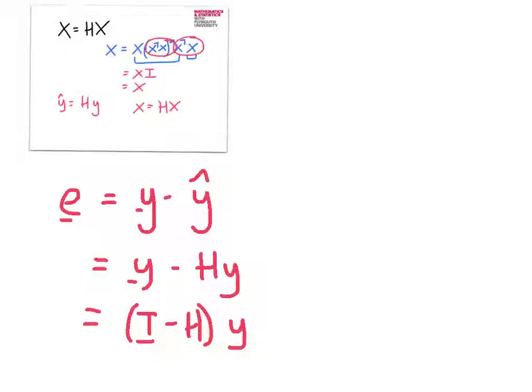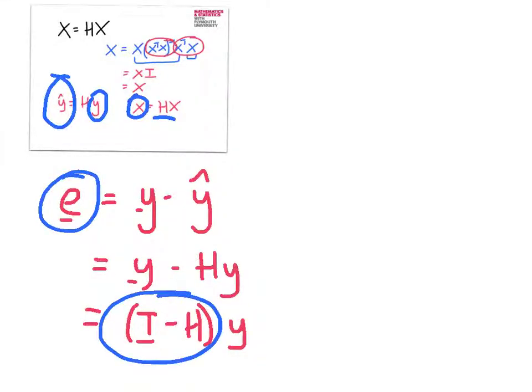Three parts of regression. Y hat is a projection of y using the hat matrix. X is invariant when projected by the hat matrix. And the residuals can be got from the identity matrix minus the hat matrix multiplied by y.